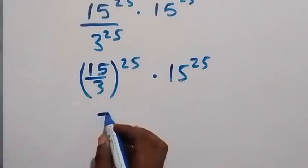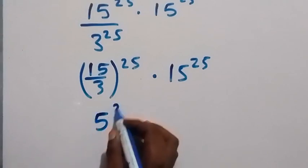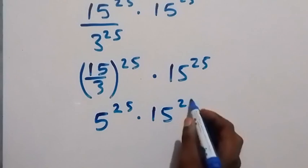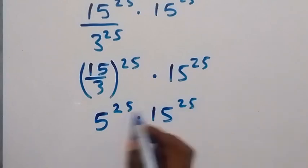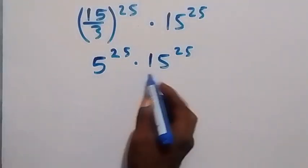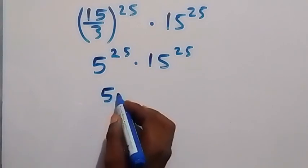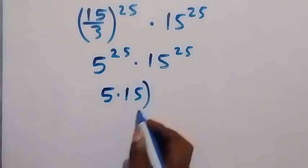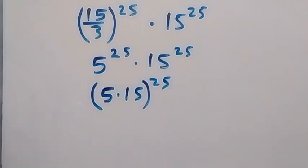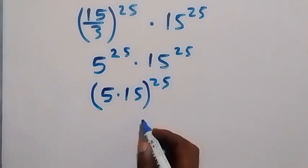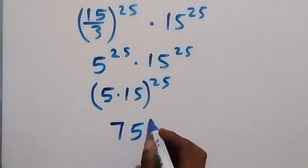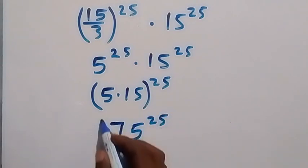15 divided by 3 is the same as 5, which is raised to power 25, times 15 raised to power 25. Since we have the same power here, we can bring this together and say this is 5 times 15, all raised to power 25. So we have the simplified form here.